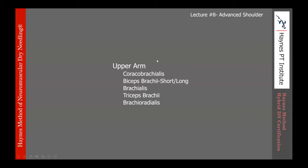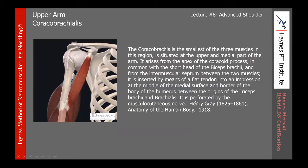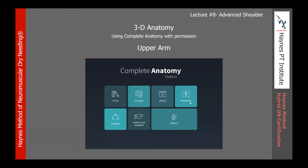Moving into the upper arm — I think we've covered all of these in our introductory material. Coracobrachialis, biceps brachii, brachialis, triceps, and I include brachioradialis because of its function at the upper arm. Coracobrachialis and the biceps short head attach onto the coracoid process; the long head of the biceps attaches onto the superior glenoid through the intertubercular groove. The triceps has its attachment onto the scapula itself — the long head. As a mover of the upper arm, it needs to be included in the conversation.